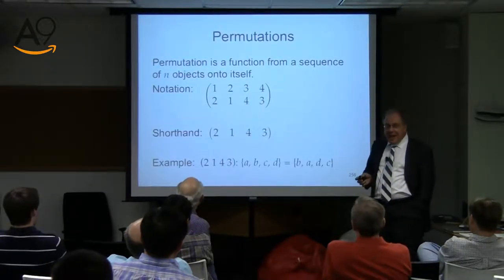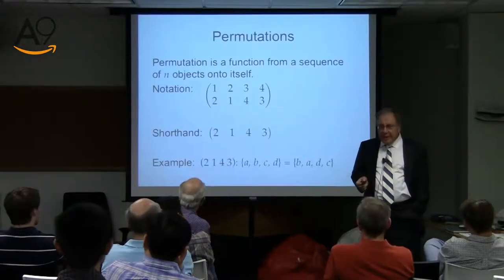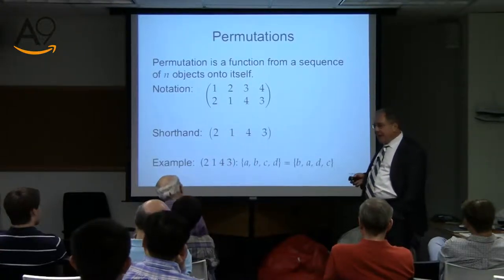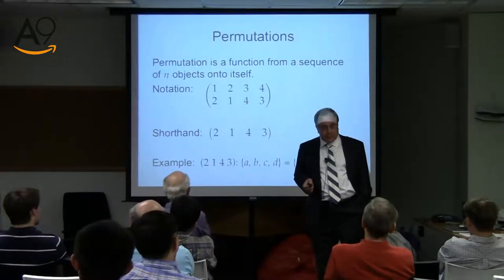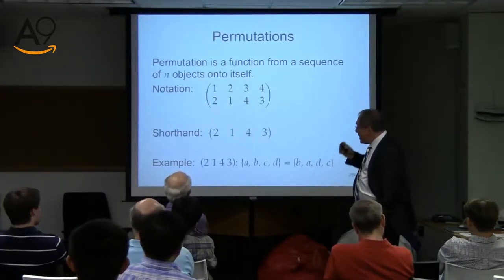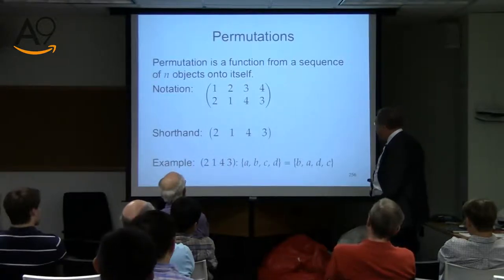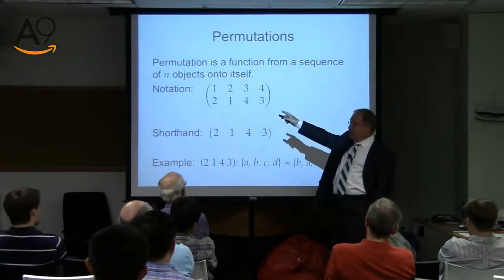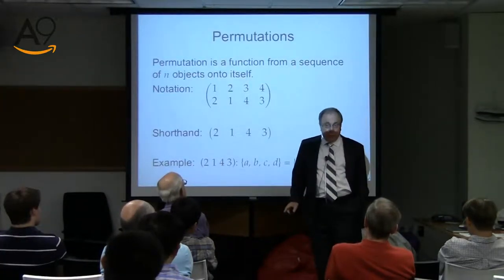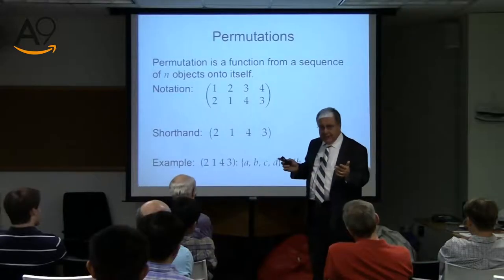Now we have to have a transition to talk about a very general kind of things called permutations. Permutations are things which permute or rearrange N elements. A permutation on a finite set is a function from a sequence of N objects onto itself. You start with N things, you have N things — things do not disappear, you rearrange.